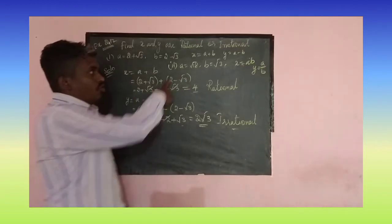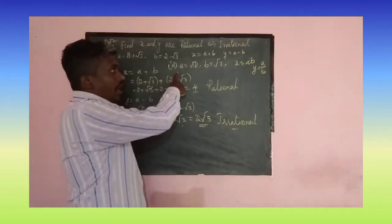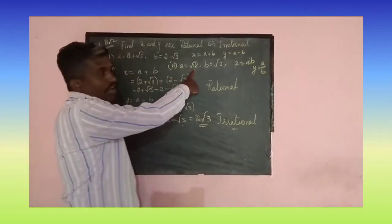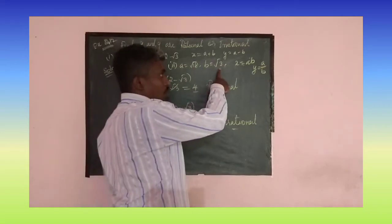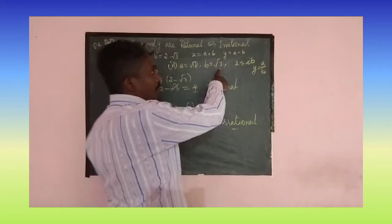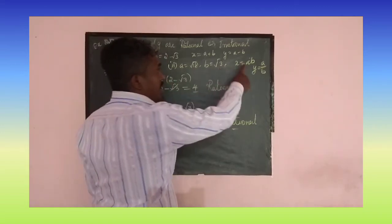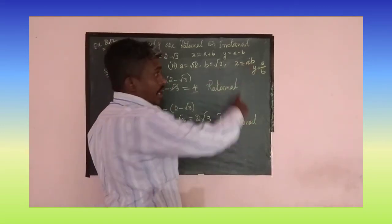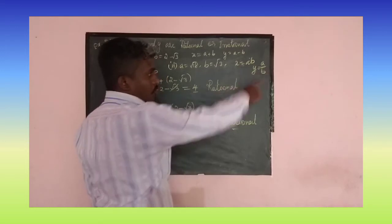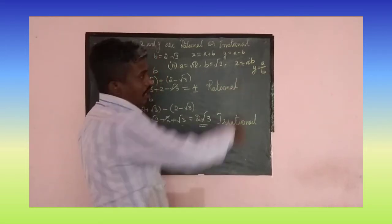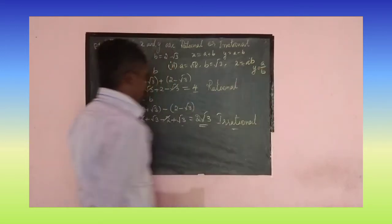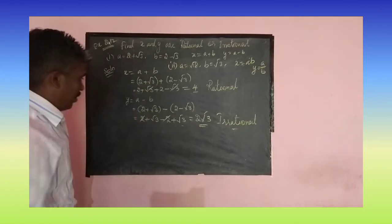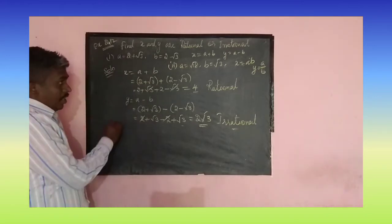The second question: a is equal to square root of 18 and b is equal to square root of 3. If x is equal to ab (a multiplied by b) and y is equal to a divided by b, we need to determine if they are rational or irrational.